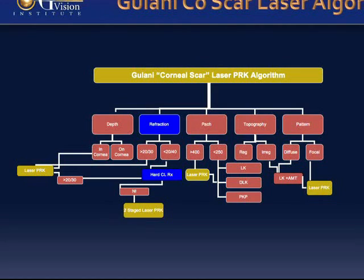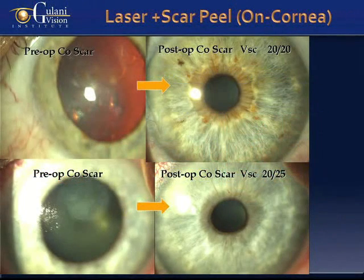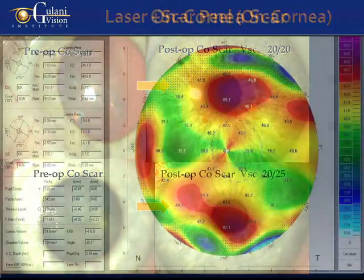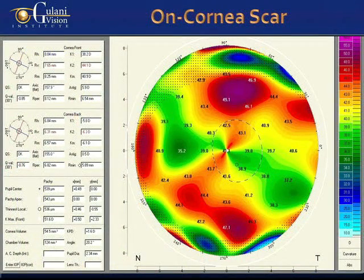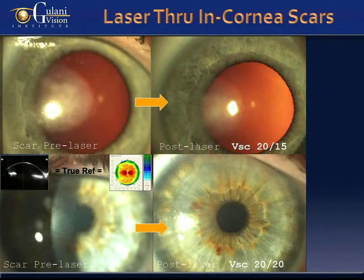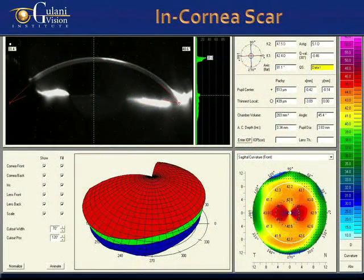For simplicity, I have divided corneal scars into on-corneal scars — scars which are above Bowman's membrane — leading to a camouflaged topography and misleading refractive error, and in-corneal scars, which actually become part of the cornea and are directly responsible for the topography, have a direct correlate to the refractive error, and hence can be lasered through.